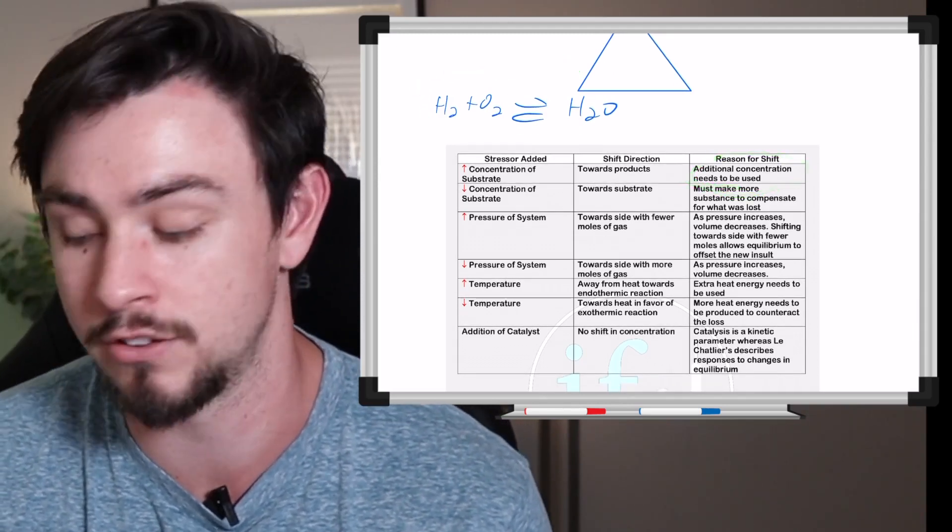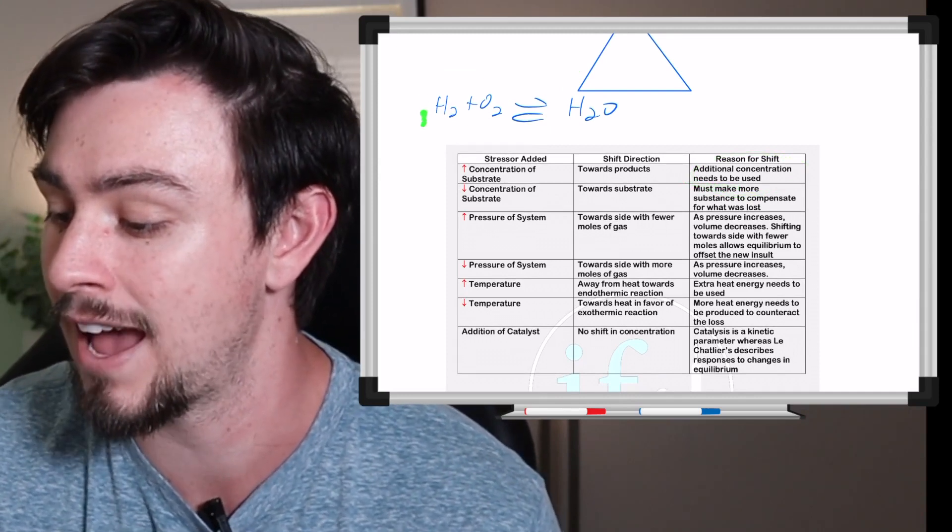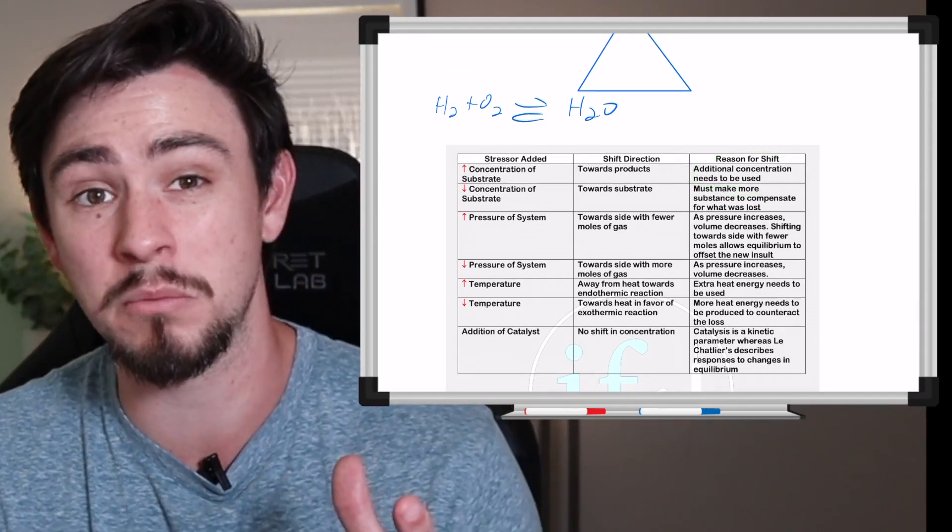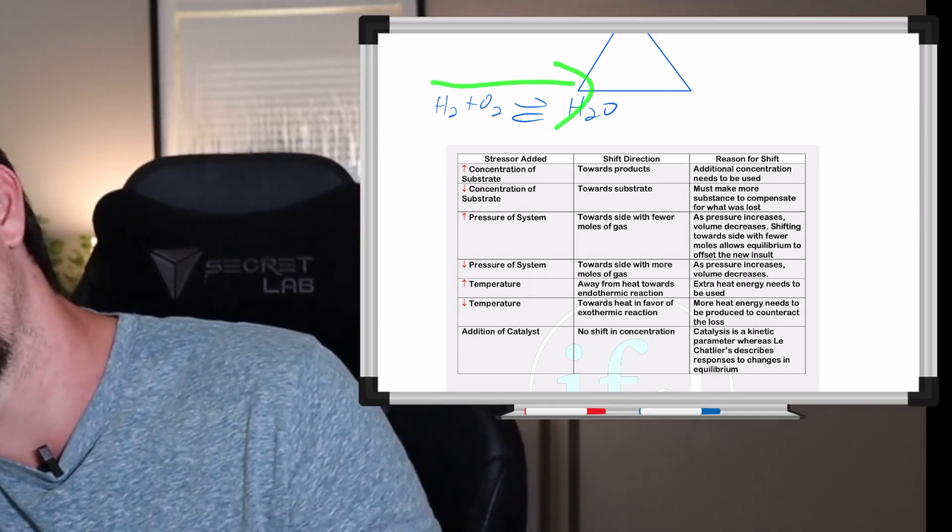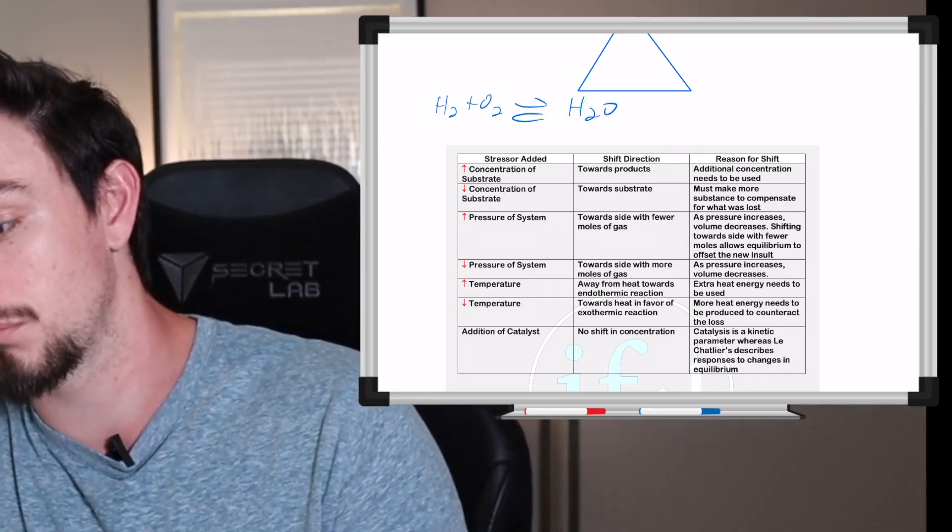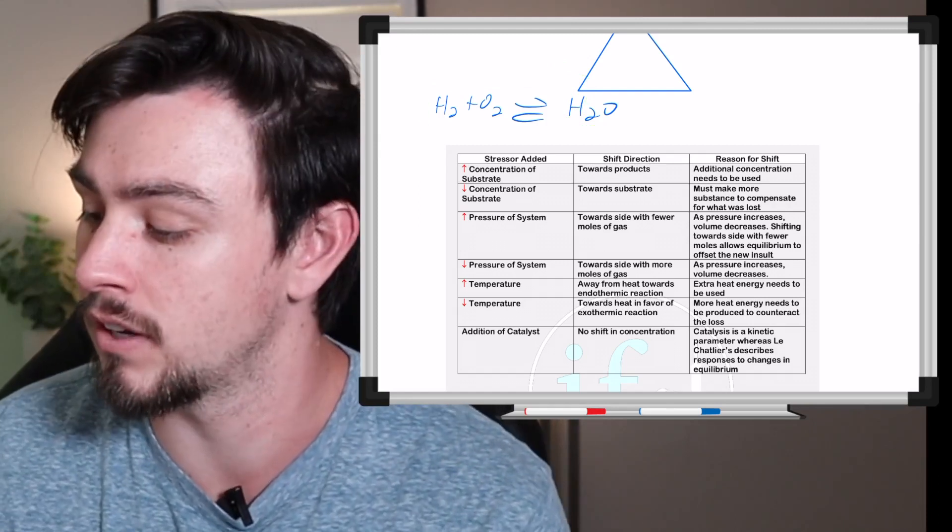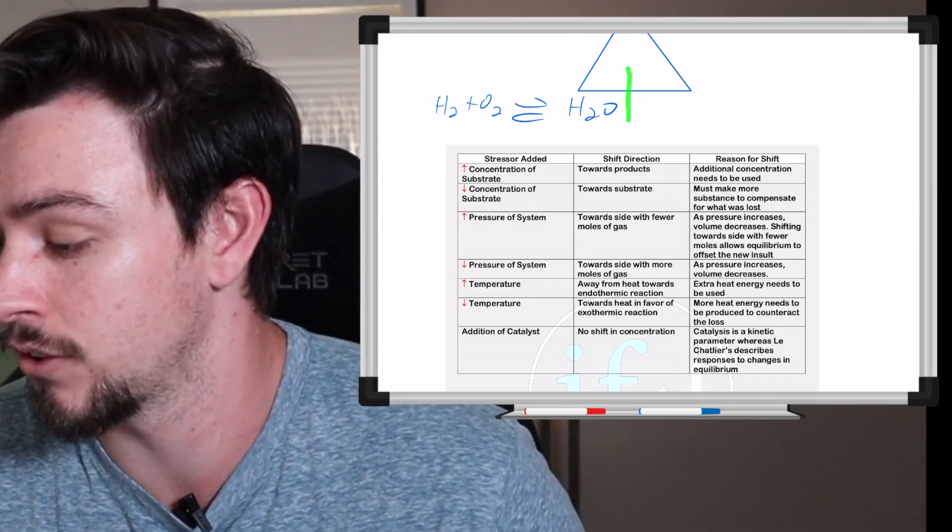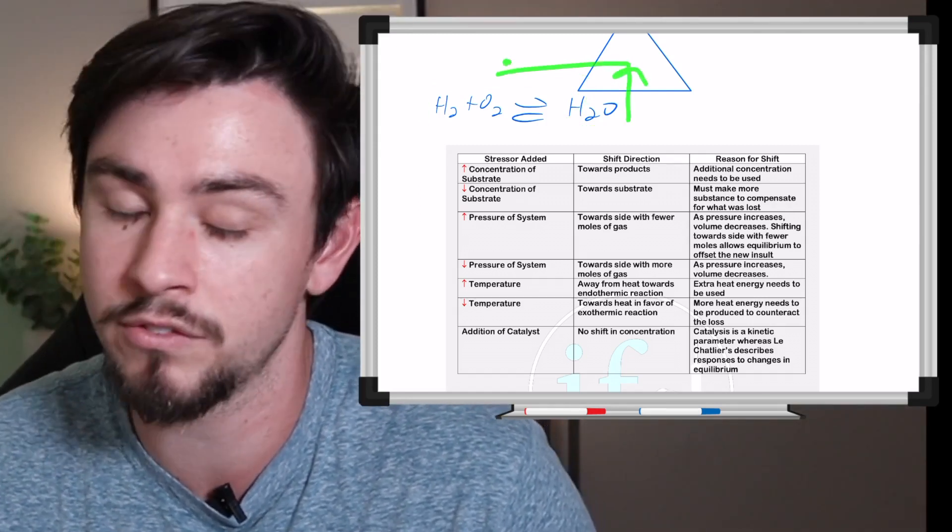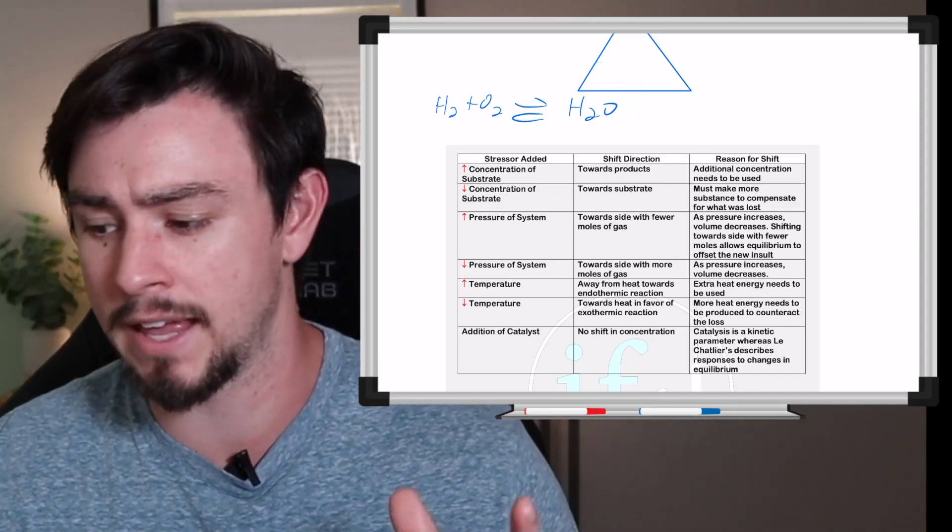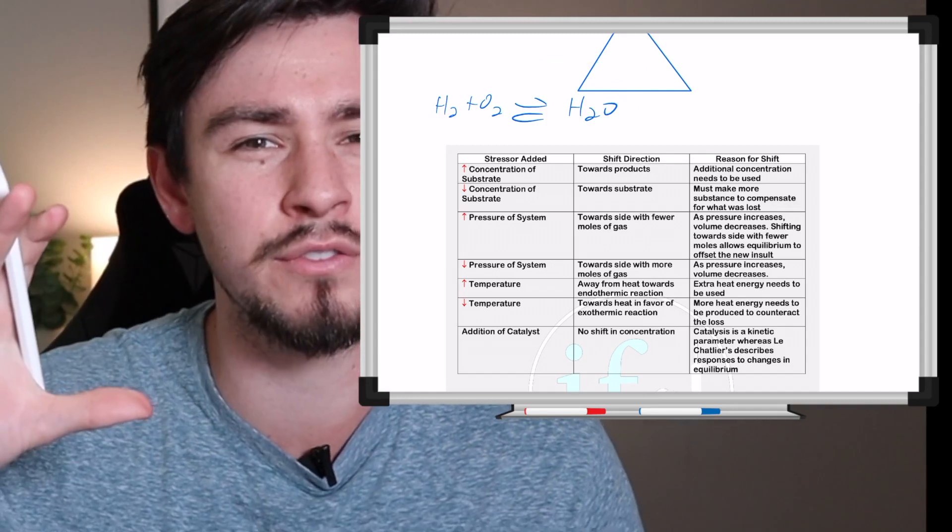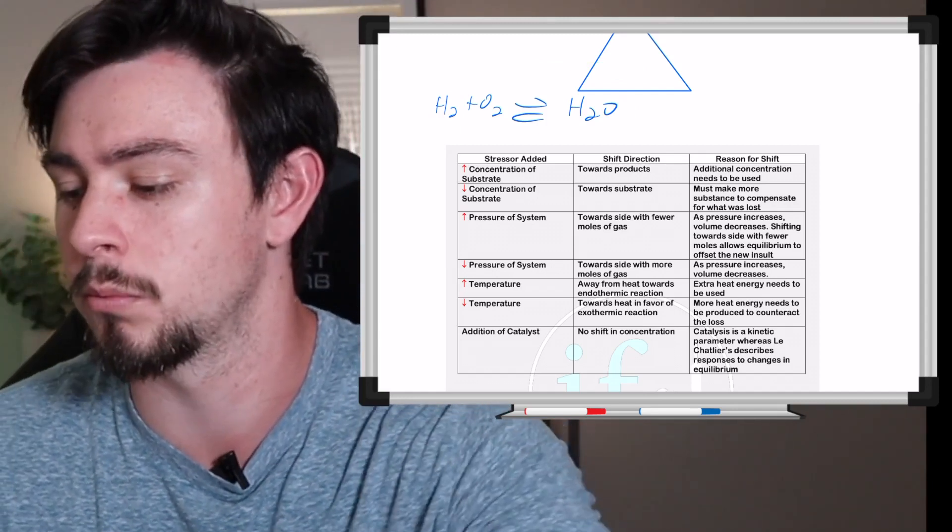The reason for that shift in the experience of increasing the substrate is because you have to use the concentration that you've added. So if you add more hydrogen, well now you've got more substrate, you want to use it up, and the way that you use that up is by shifting the whole reaction in favor of products, and vice versa. So if you increase the concentration of the products, then you have to shift away from that to balance out the equation to return to equilibrium. And that's kind of the surface level of Le Chatelier's principle.